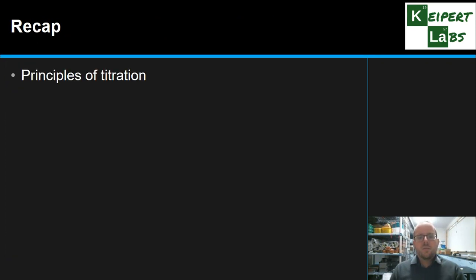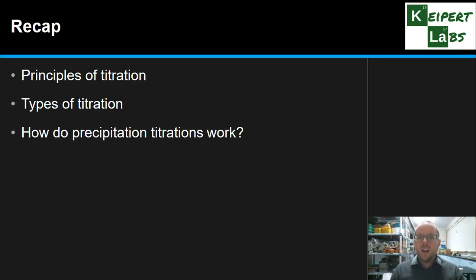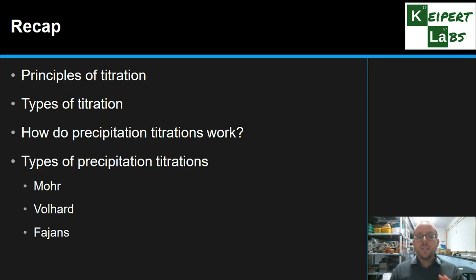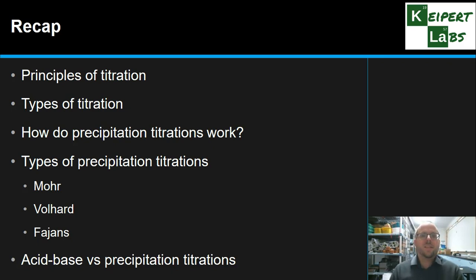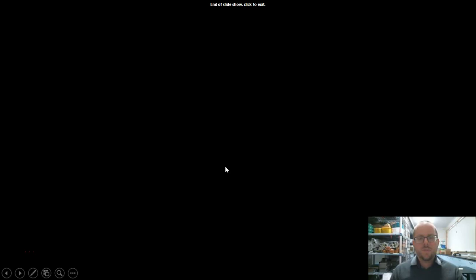So we looked at, and reminded ourselves of, the principles of titration. We looked at different types of titrations to help put precipitation in context. We looked at how precipitation titrations actually work, the three different methods of precipitation titrations, and then compared them with the acid-base titrations we're more familiar with. Thanks very much for watching — don't forget to like and subscribe. Bye for now.